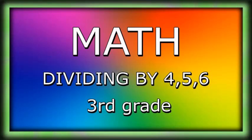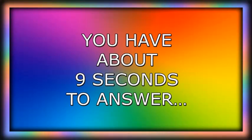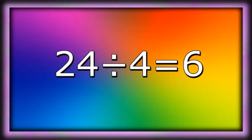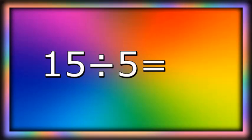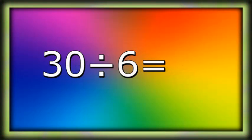Math: dividing by 4, 5, 6 — third grade. You have about nine seconds to answer. 24 divided by 4 equals 6. 15 divided by 5 equals 3. 18 divided by 6 equals 3. 30 divided by 6 equals 5.